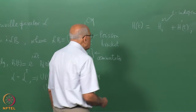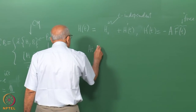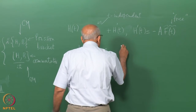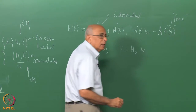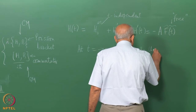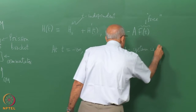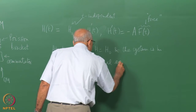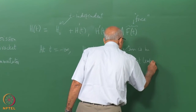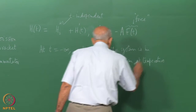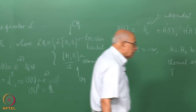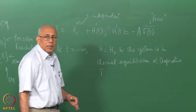We start by saying that at t equal to minus infinity, the perturbation is not yet switched on and the system is in equilibrium. Setting the stage where the perturbation is switched on at minus infinity means every other case is a special case — we can switch it off until some time and then start it. So we assume that at t = -∞ there is no perturbation; the Hamiltonian is just H-naught and the system is in thermal equilibrium in the canonical ensemble at temperature T.